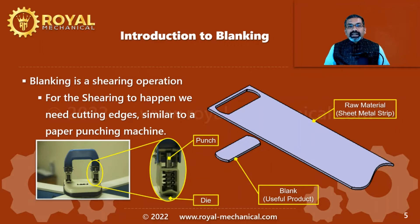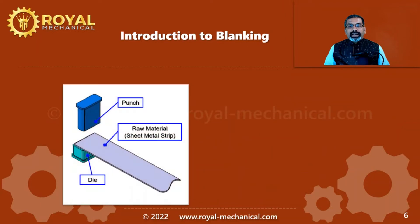Both the punch and the die have the cutting edge. When you place the paper in between the punch and the die and apply the force using your hand, the paper gets sheared. Similarly, we have a punch and the die in our press tool. We are going to position the raw material strip in between the punch and the die.